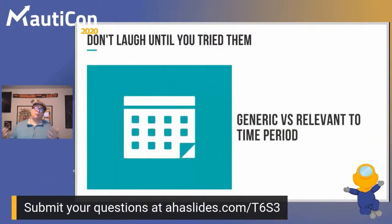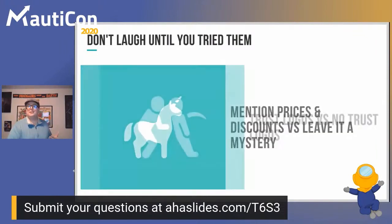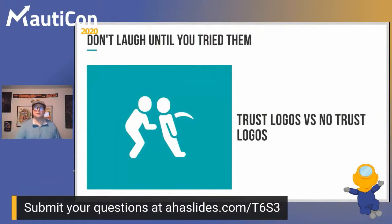Try generic versus relevant to the time period — for a dating site, 'do you want a girlfriend by Christmas?' ties into the season. But don't virtue signal — don't do 'in these difficult times, COVID…' if it's not genuine, because being genuine above anything else converts better. Try mentioning discounts and prices versus leaving them hidden — we've all seen sites where you have to log in or add to cart to see the price. Try trust logos like the Better Business Bureau versus no trust logos — sometimes they convert better, sometimes not. Make sure you have permission to use any logos; in the U.S., you can't use the BBB logo without paying a licensing fee even if you're a member.